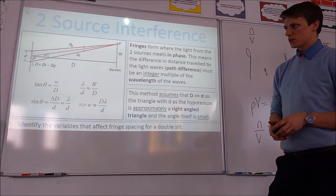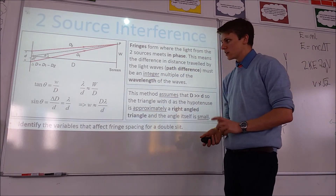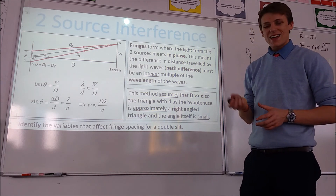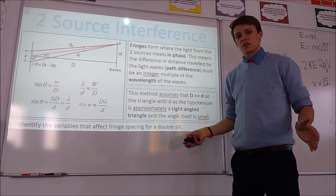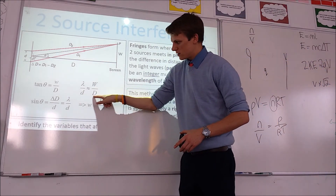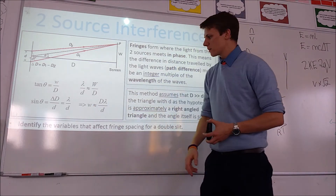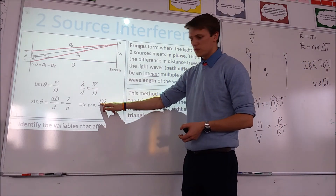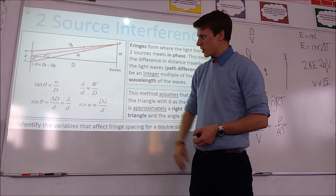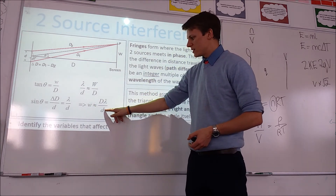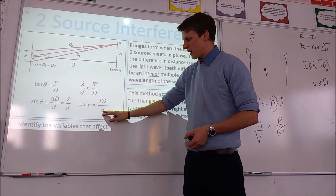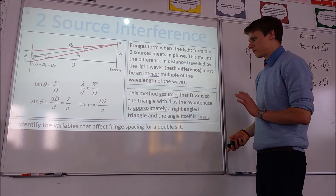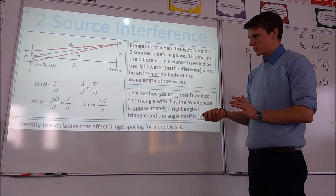For really small angles — which occurs when D is much bigger than little d — sin theta and tan theta are approximately equal. So we can equate the two expressions and rearrange to make fringe spacing W the subject, giving us the equation W equals lambda D divided by d. From this equation: moving the screen further back increases the spacing; increasing the wavelength increases the spacing; and decreasing the slit separation d also increases the spacing. Those three things act to increase the spacing between the fringes.